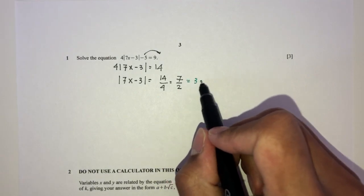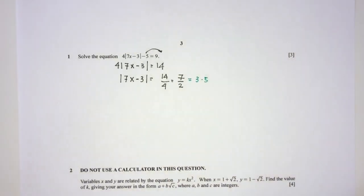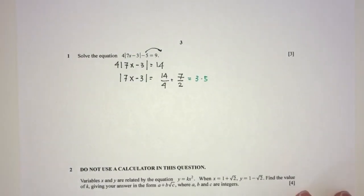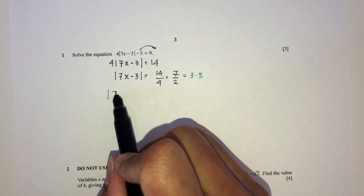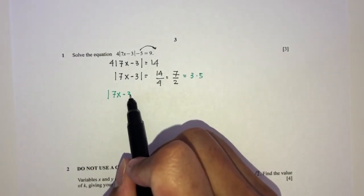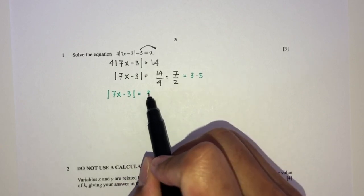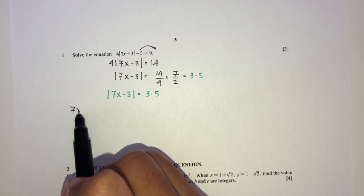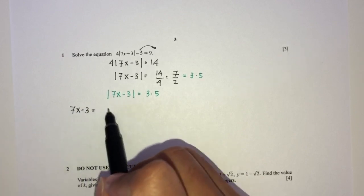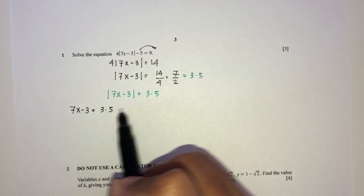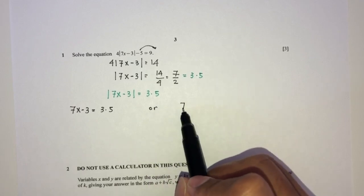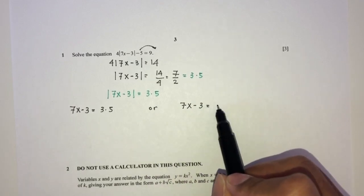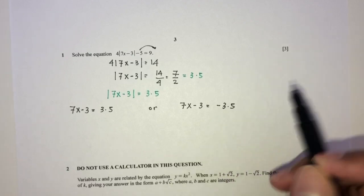Which is 3.5. You can always use your calculator here — it is an AdMath paper, so you can use your calculator, there should not be any issue. Once we have this equation, which is the modulus of 7x minus 3 equal to 3.5, we can break this down into two parts: 7x minus 3 equals 3.5, or 7x minus 3 equals minus 3.5.